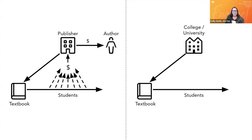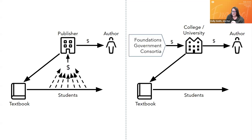In open publishing — the model on the right — a faculty member or members at a college or university publish a textbook. Part of the funding is paying faculty up front for their efforts. Early in the open movement, funding came from the outside — from foundations, government, and consortia. Increasingly, these costs are being self-funded by universities.